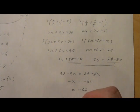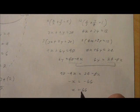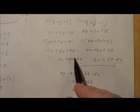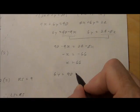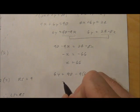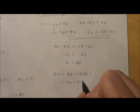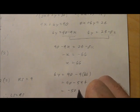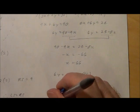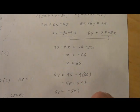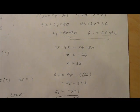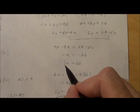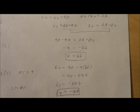And now we'll substitute in again. So now we're going to substitute this into this first equation here. So 6y equals 90 minus 9 times 66, 90 minus 594 is negative 504. And then when you divide both sides by 6, we get y equals negative 84.